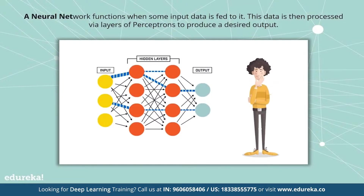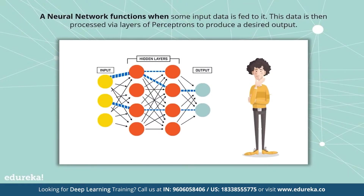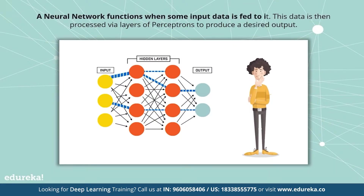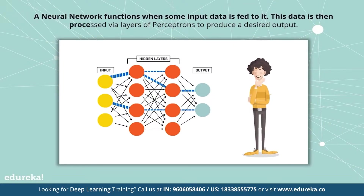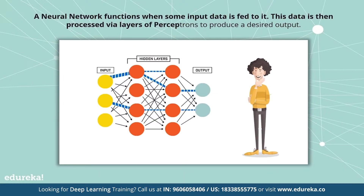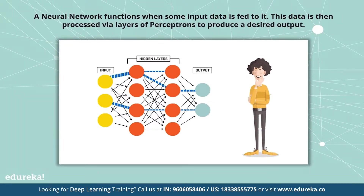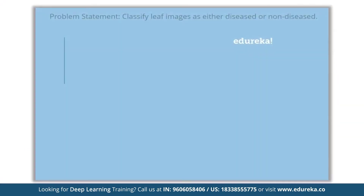A neural network functions when some input data is fed to it. This data is then processed via layers of perceptrons to produce a desired output. Let's understand neural networks with a small example.